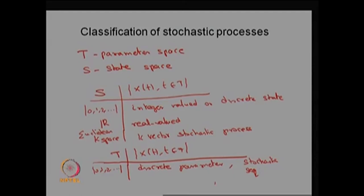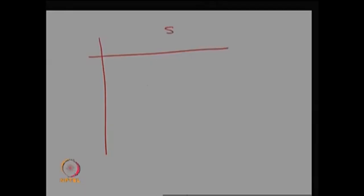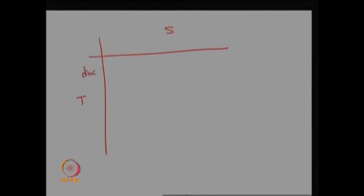If T takes uncountably many values, it is called a continuous parameter stochastic process. Based on this classification, we can create a table: T can be discrete or continuous, and S can be discrete or continuous. If T is discrete it is called a stochastic sequence; if T takes uncountably many values such as intervals or the whole real line, it is a continuous parameter.